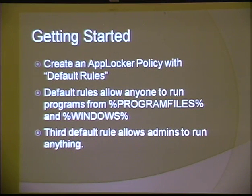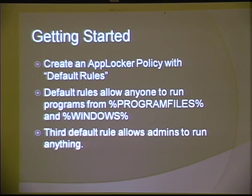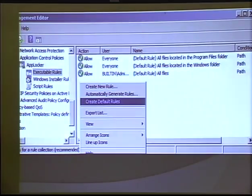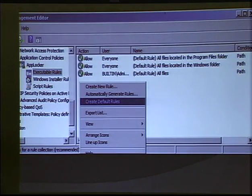Let's get started. When you try to create an AppLocker policy and set it to enforce, it's going to prompt you: do you want to create default rules? Yes. Those default rules — there are three: allow everything in Program Files, allow everything in the Windows directory, and allow admins to run everything. Pretty self-explanatory. At any time you can right-click and just choose Create Default Rules.